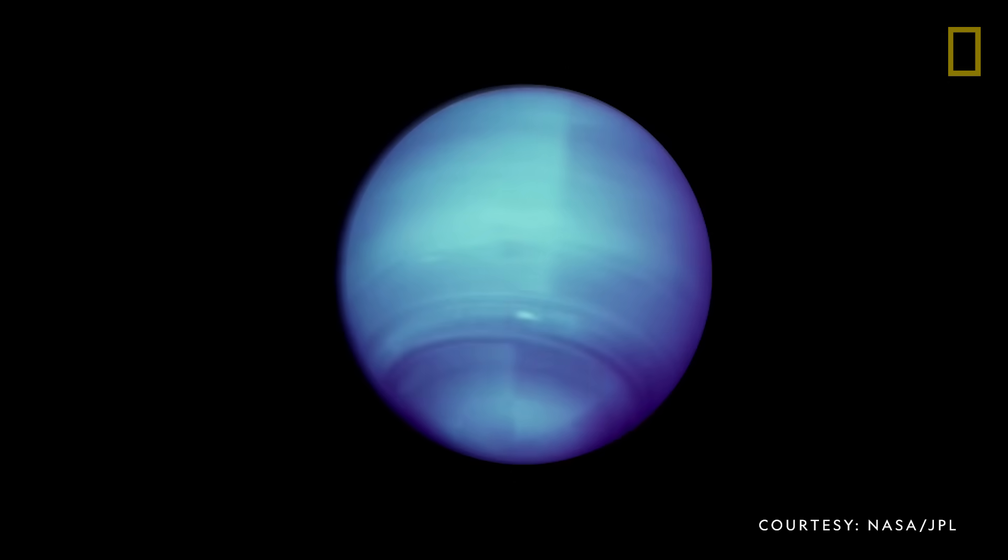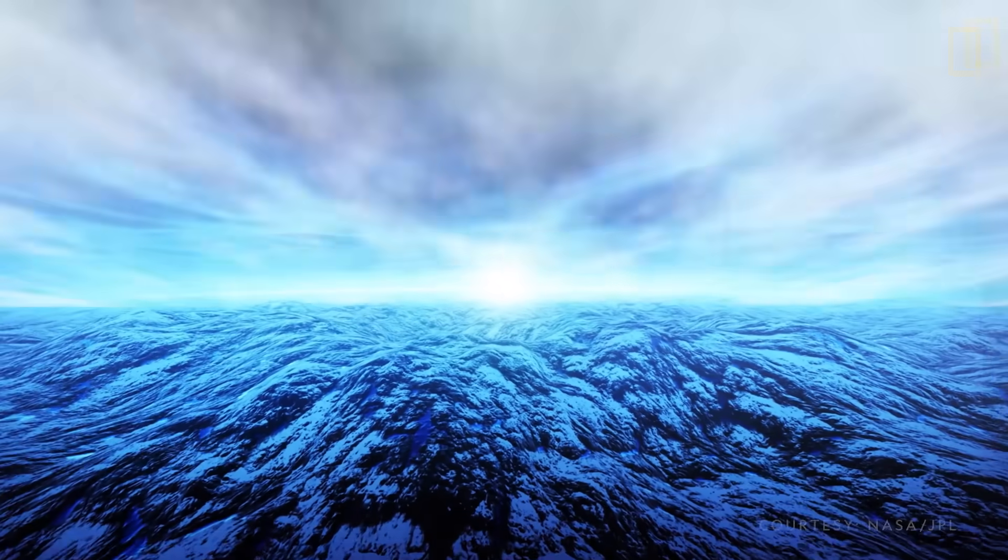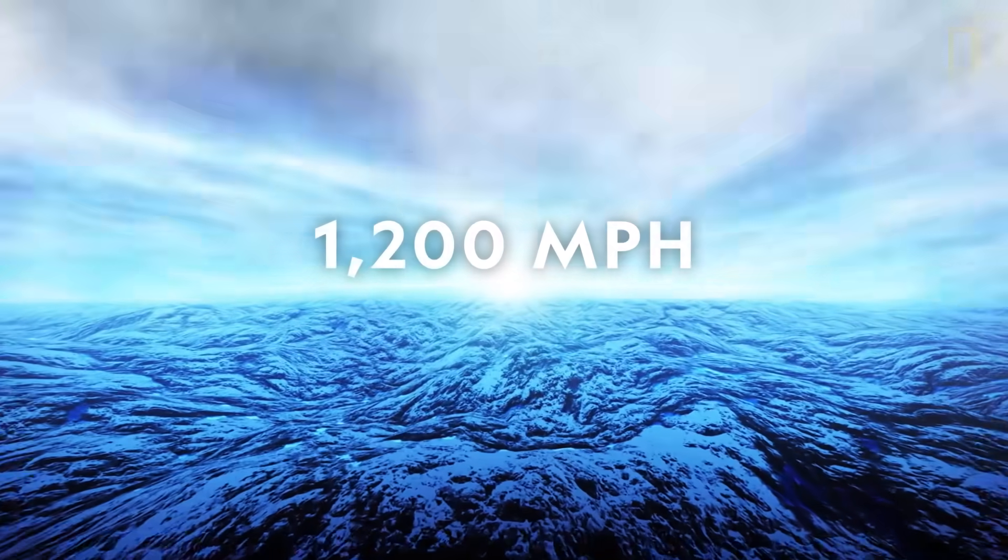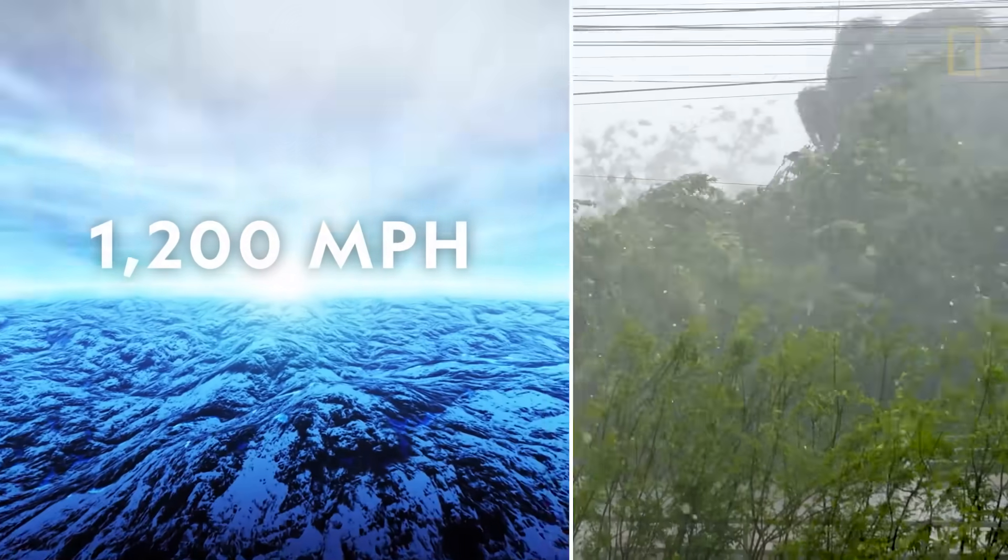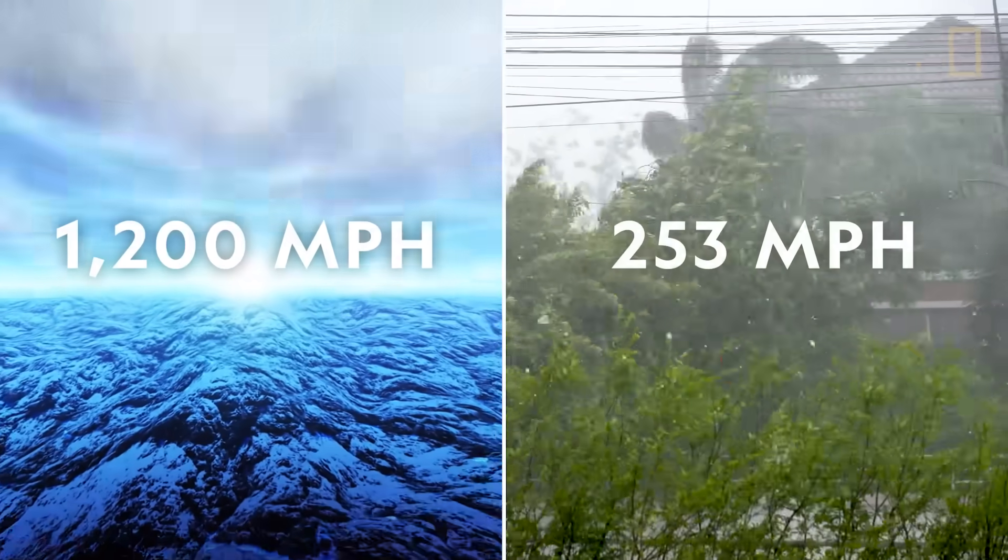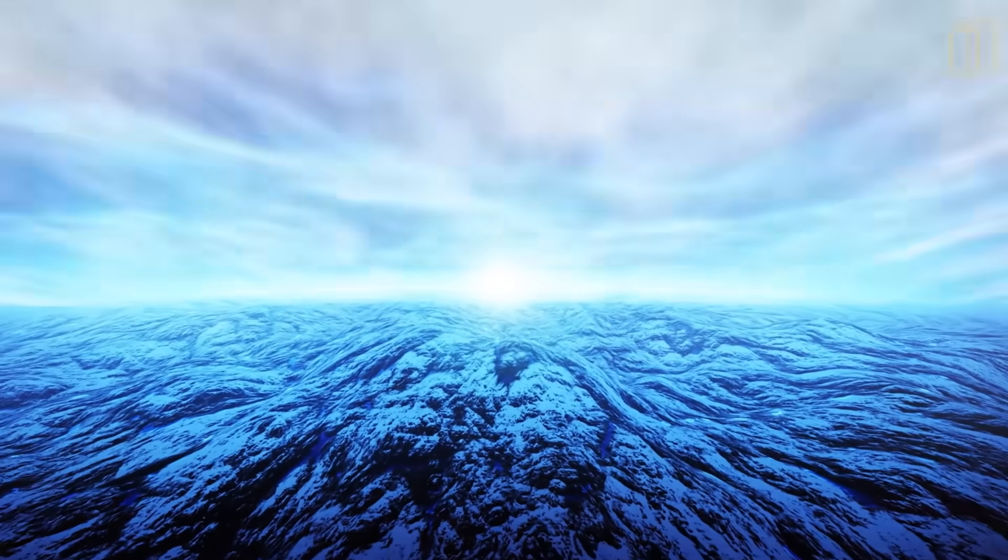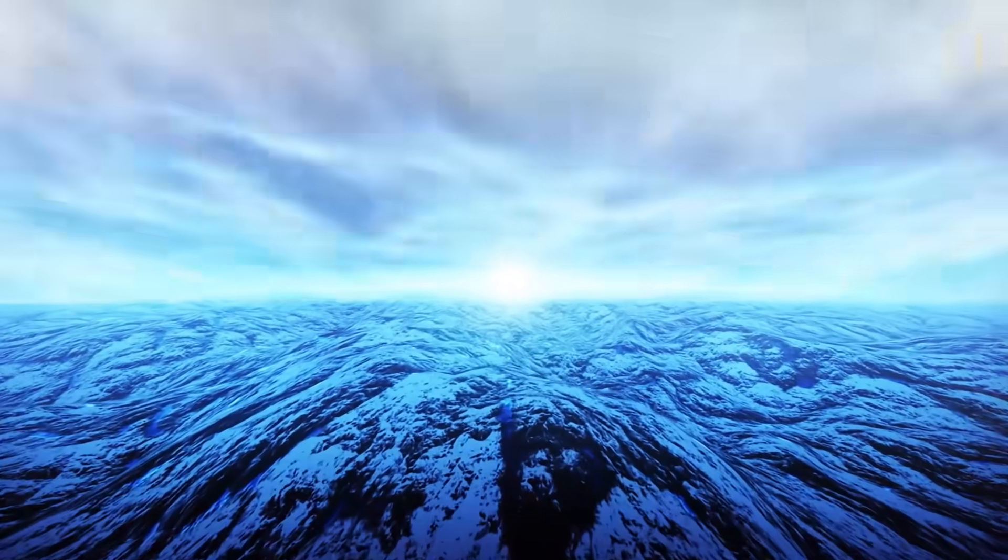While the clouds create a cool, calm veneer from afar, up close they are whipped around by the most severe weather in the solar system. Winds on the planet reach speeds of over 1,200 miles per hour, nearly five times faster than the strongest winds recorded on Earth. In fact, the winds are so powerful that they break the sound barrier.